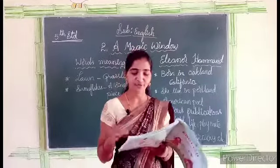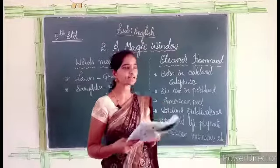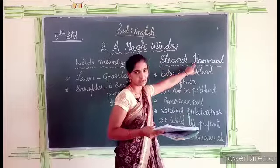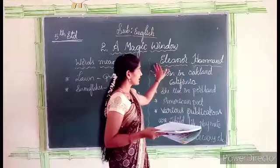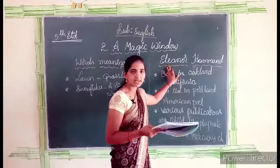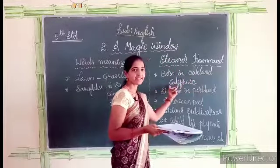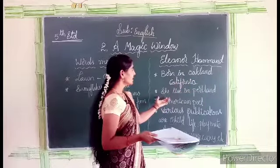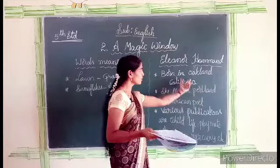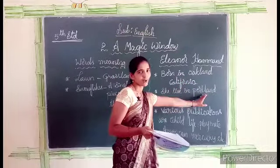Before we explain the poem, let us know something about the author. This poem was written by Eleanor Hammond. She is a female poet. She was born in Oakland, near California, and she also lived in Portland.